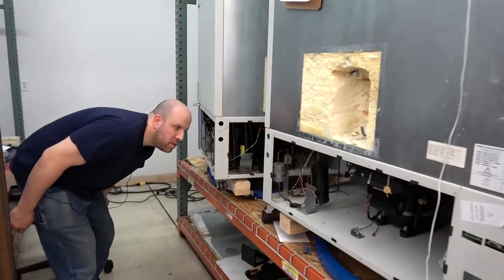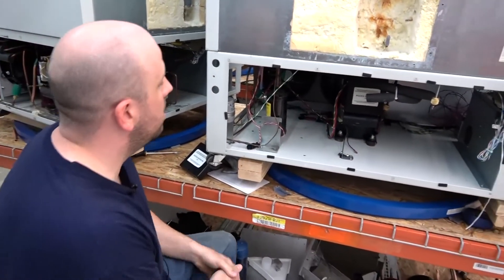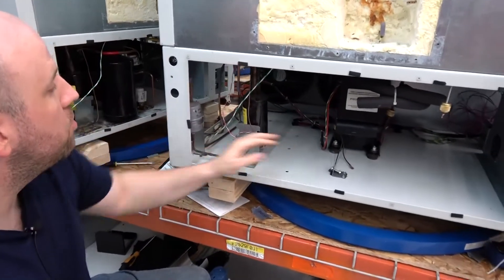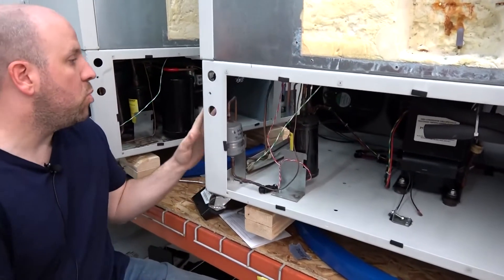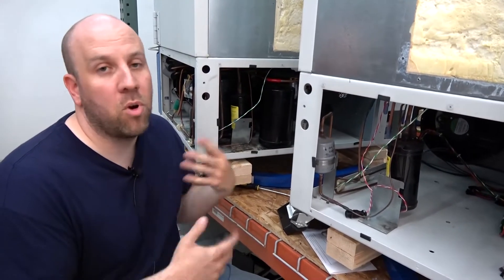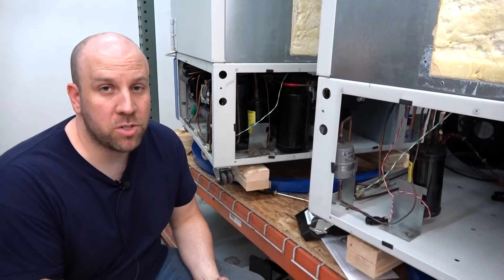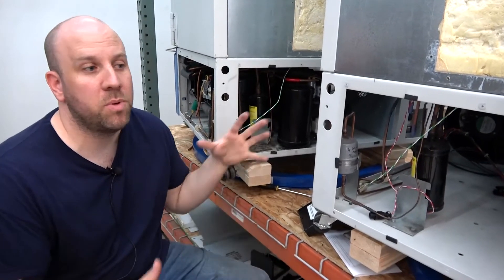This is typically what it'll look like when we're done. We'll go ahead and clean this up real good. Then at this point, the components are all ready to be put back in the system, brazed in. We do a pressure test at that point to make sure there's no leaks from all the brazing we did and all the components in.